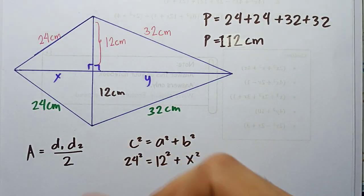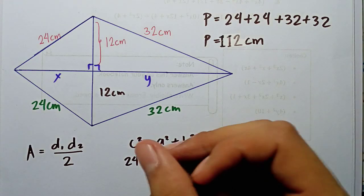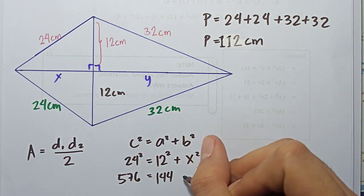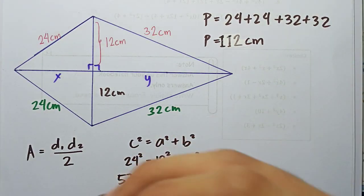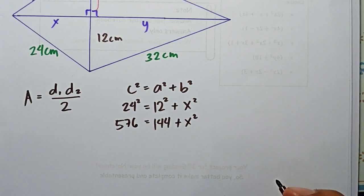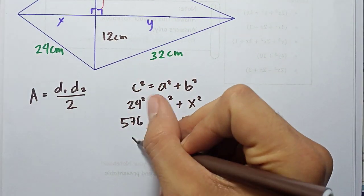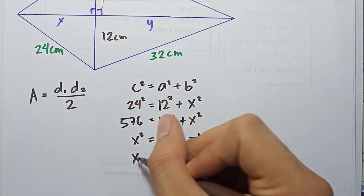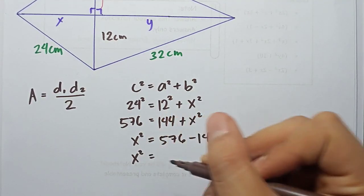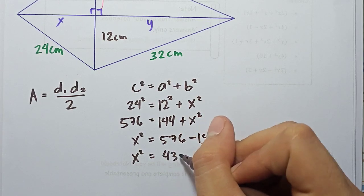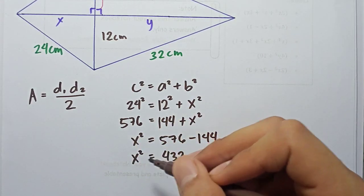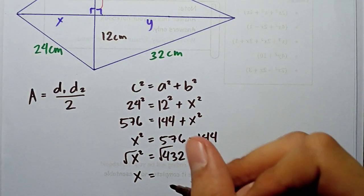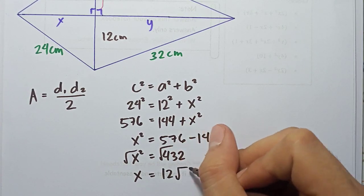24² = 576 and 12² = 144, so: x² = 576 − 144 = 432. Taking the square root of both sides: x = 12√3.